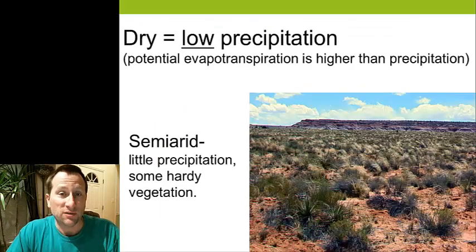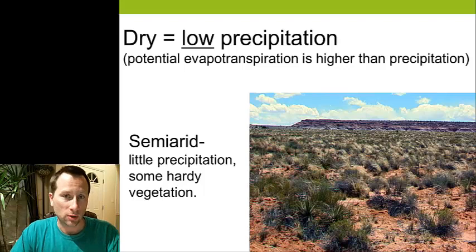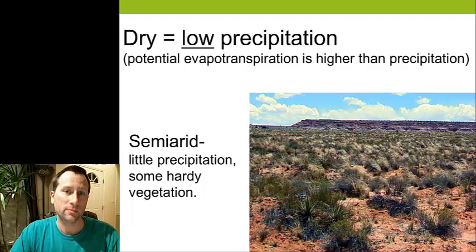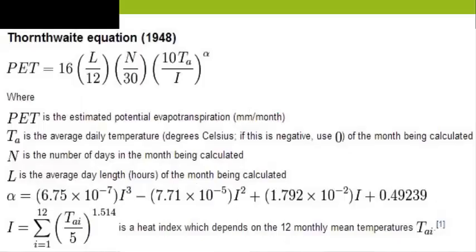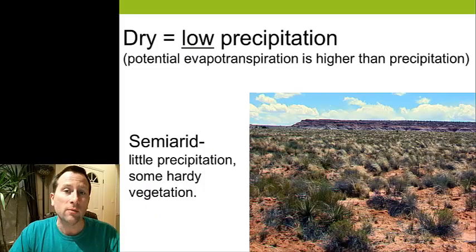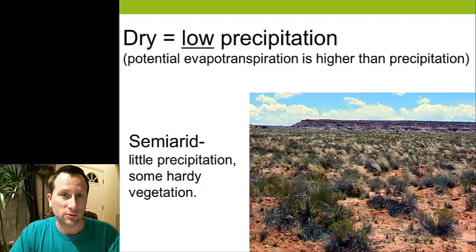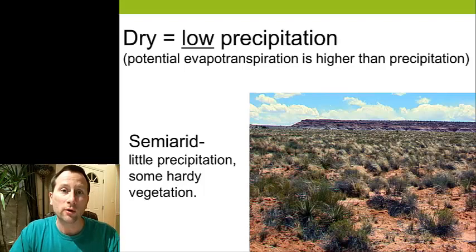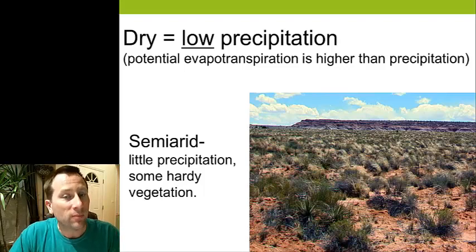The next major classification is dry climate. That means their potential evapotranspiration is higher than their precipitation. Evapotranspiration is the sum total of the amount of water that evaporates and the amount of water that is given off by plants through transpiration. Potential evapotranspiration is the amount of water that would evaporate if there were water there, and the amount that would be given off by plants if there were plants and water there.